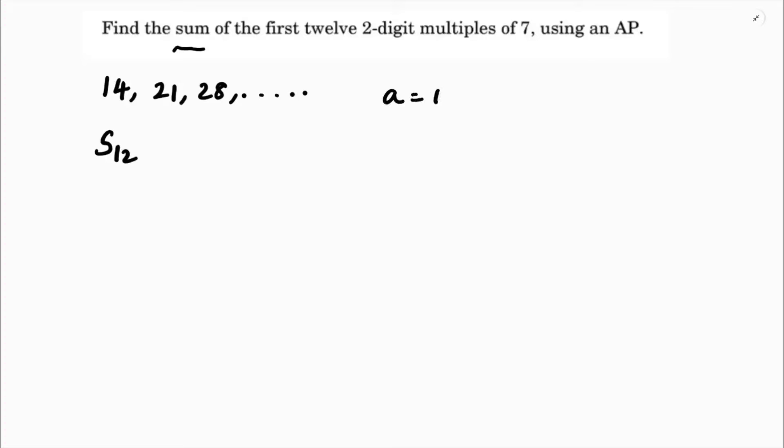Here A is 14. We find the common difference, which is A2 minus A1, so 21 minus 14. These are multiples of 7, so you can directly write d equals 7.